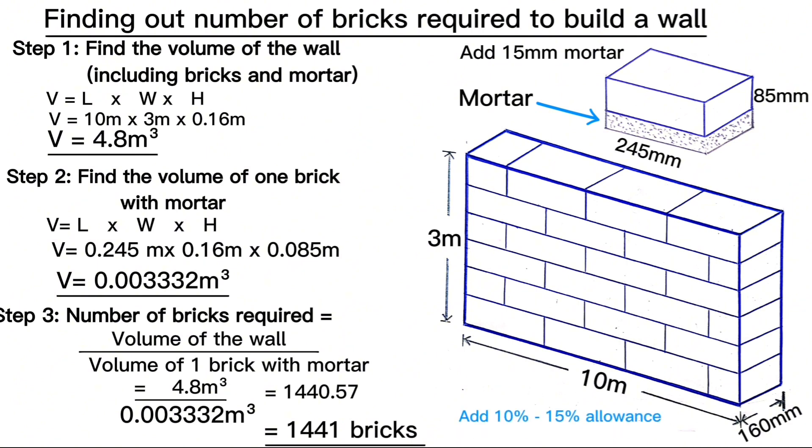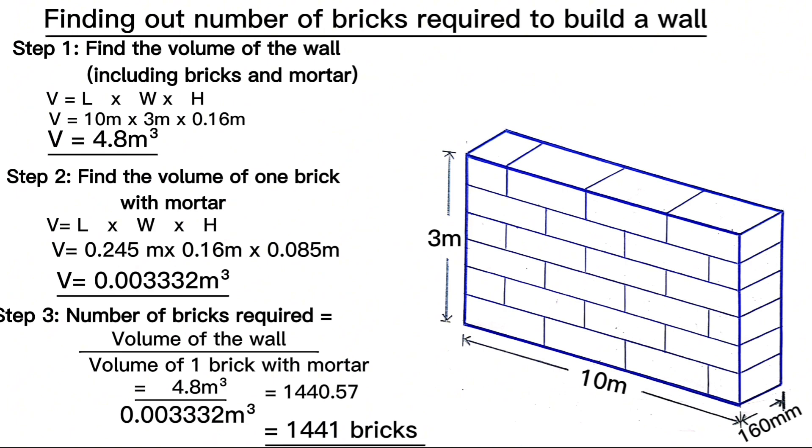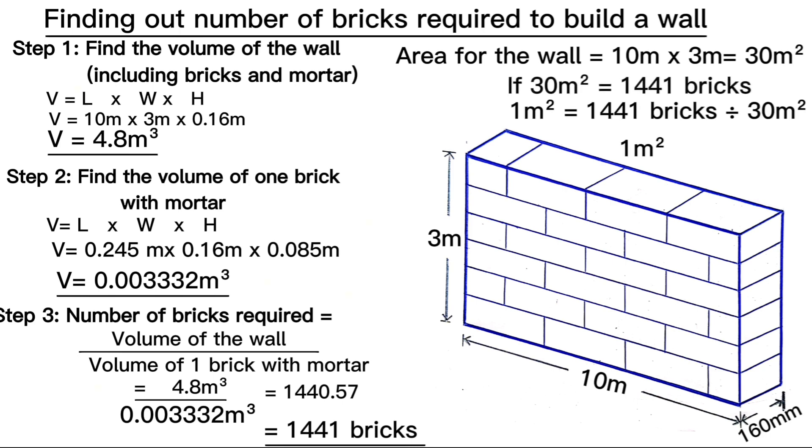The total area for this wall is 10 meters along the length and 3 meters along its height, meaning you get 3 multiply by 10 to get 30 square meters. For one square meter you need 48 bricks.